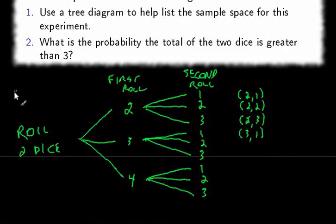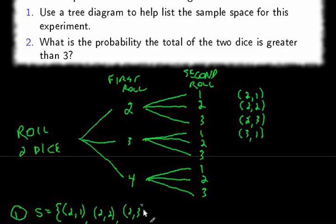So for question number one, we can write the sample space like this. The sample space is the set that contains all the outcomes, and we started listing them, but we're going to finish the list here. So here we have two, one, two, two, two, three,